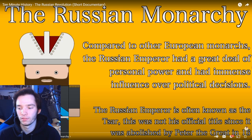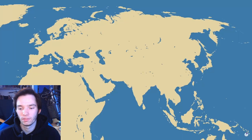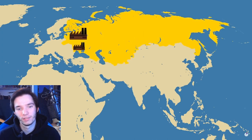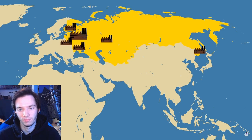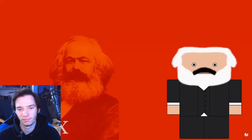Nicholas II was an absolute monarch, which meant that he had the final say on everything concerning the Russian Empire, which was huge. During the late 19th century, Russia had seen rapid industrialization. Alongside this came new ideas, such as the communist ideals of a certain Karl Marx, which led to the working class of Russia demanding greater representation.